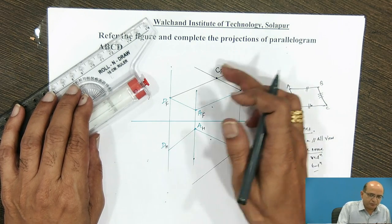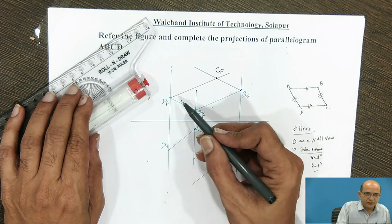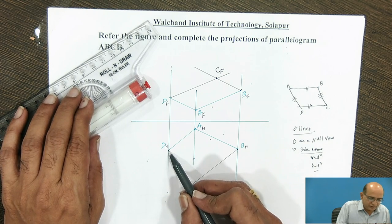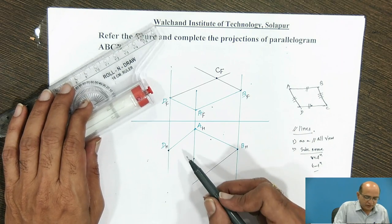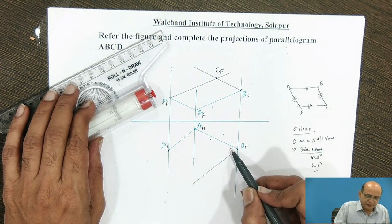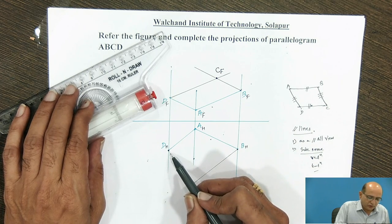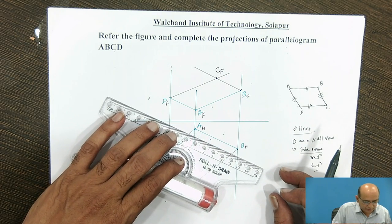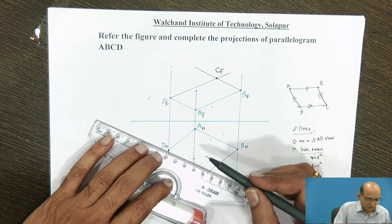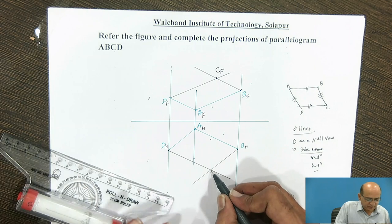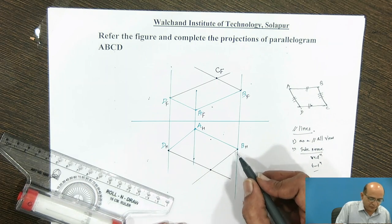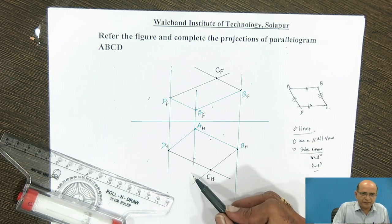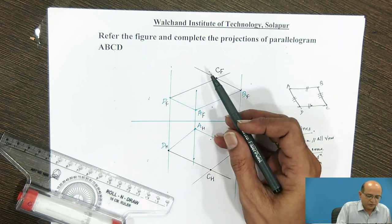That completes the parallelogram in the front view. In the same manner, we complete the parallelogram in the top view by drawing a line from the D edge point parallel to AB (that is, AH–BH edge). From corner D, we draw a line parallel to AB, and it intersects with the line from B to give the point CH. This completes both the top view and front view of the parallelogram.